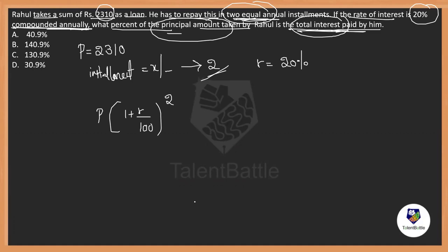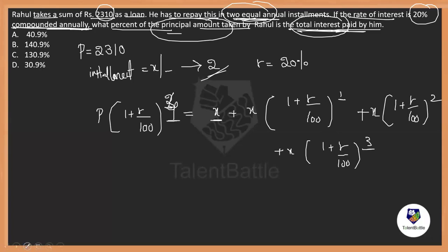The formula is P into 1 plus R by 100 whole square equals to x plus x into 1 plus R by 100 whole to the power of 1. If it is 2 here, here first x is fixed and here only one should come. This is a fixed formula for the installments.